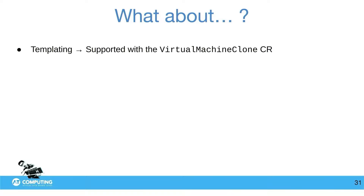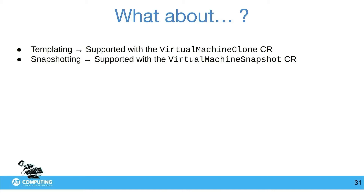What about templating? It's a big part of my ideal hypervisor vision. You can use templating with the VirtualMachineClone custom resource — create a golden image, generalize it, shut it down, and use the VM clone CR to create a clone. Snapshotting is also supported when using the VirtualMachineSnapshot custom resource. You have to make sure your volume snapshot class is configured, which means your CSI has to support snapshots.